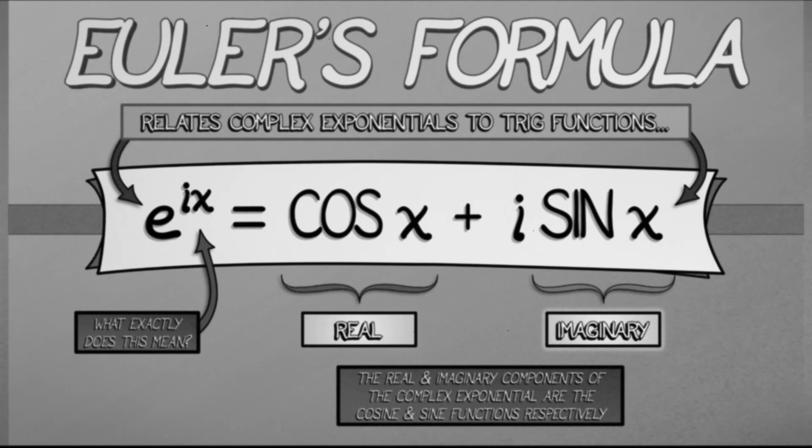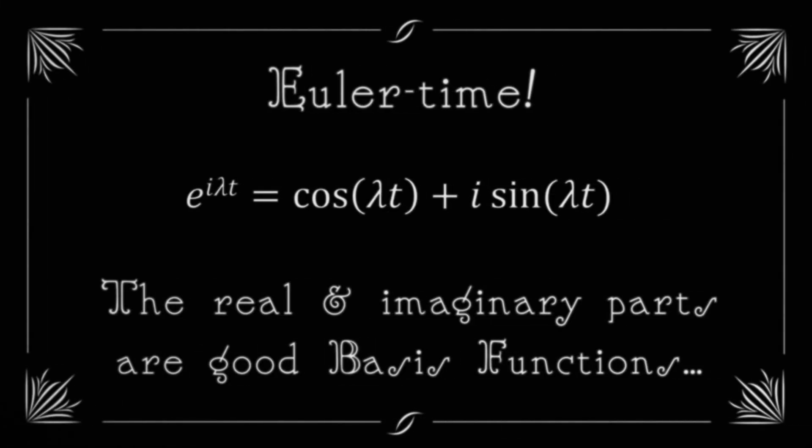But this time, let's update it a little bit to reflect the terminology, the notation that we're using. E to the i lambda t is what? It's going to be cosine of lambda t plus i times sine of lambda t. And I'm going to let you check what happens when you put a minus sign up in there. You have to use some properties of sine of cosine. The end result is that the real and imaginary parts of this complex expression are going to be very good basis functions for solving our differential equation.